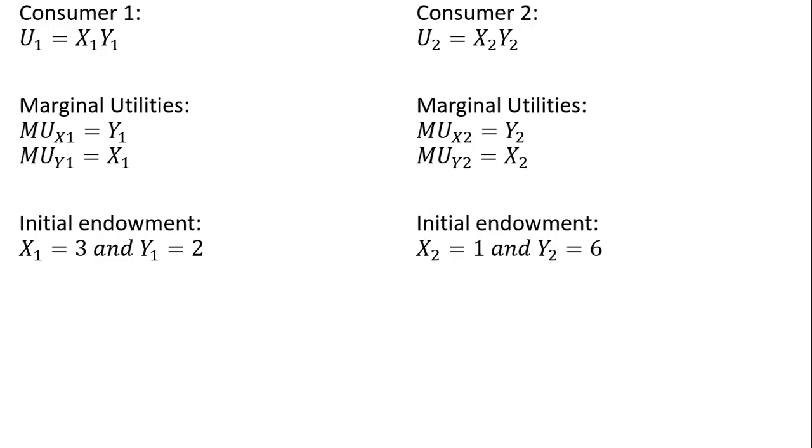And this consumer's initial endowments: this consumer currently has one unit of good x and six units of good y.